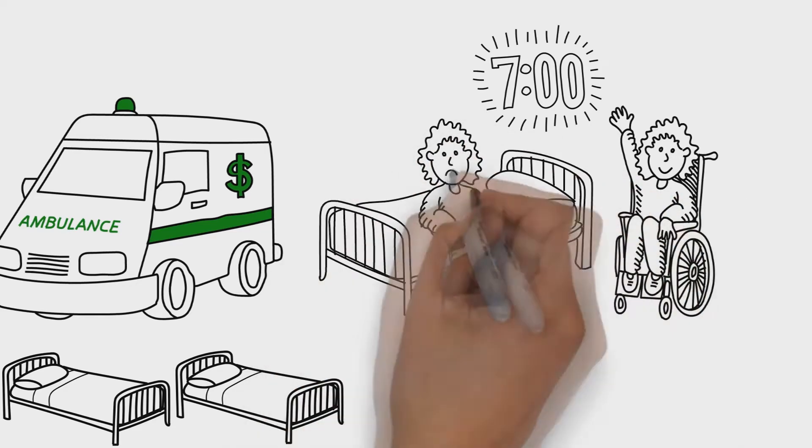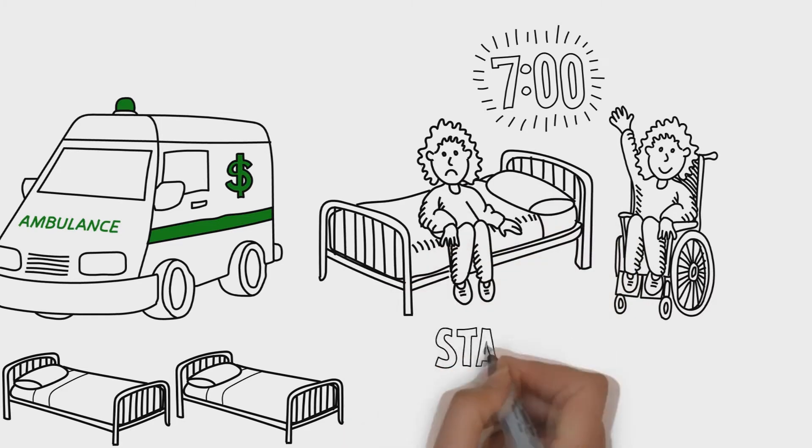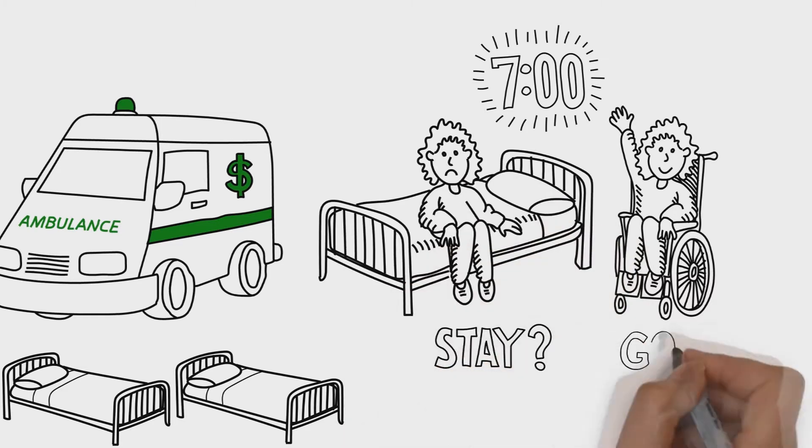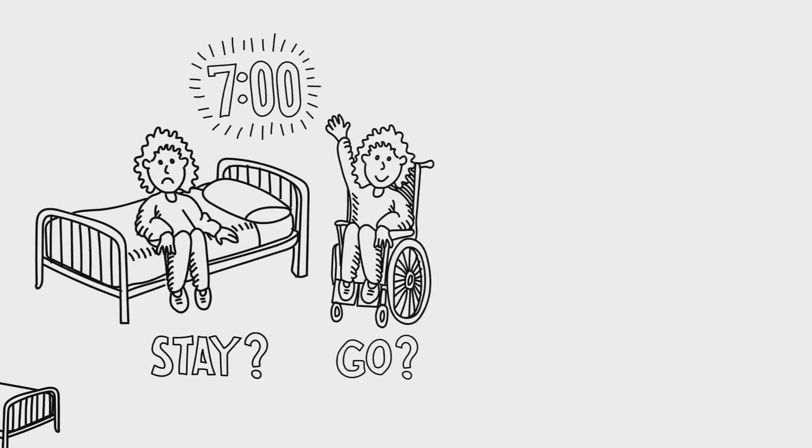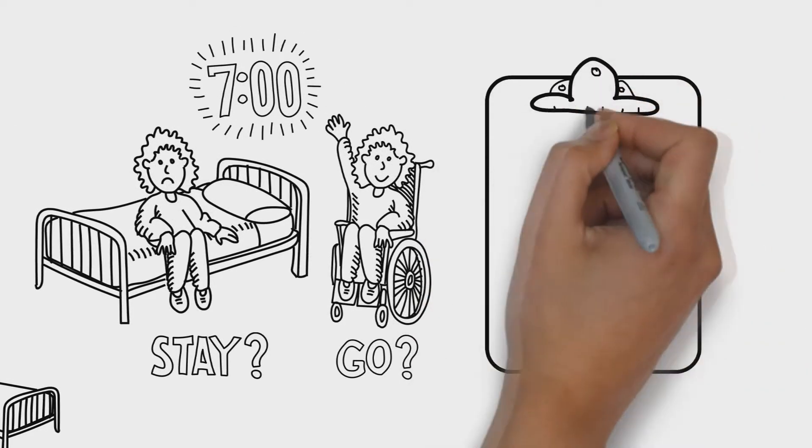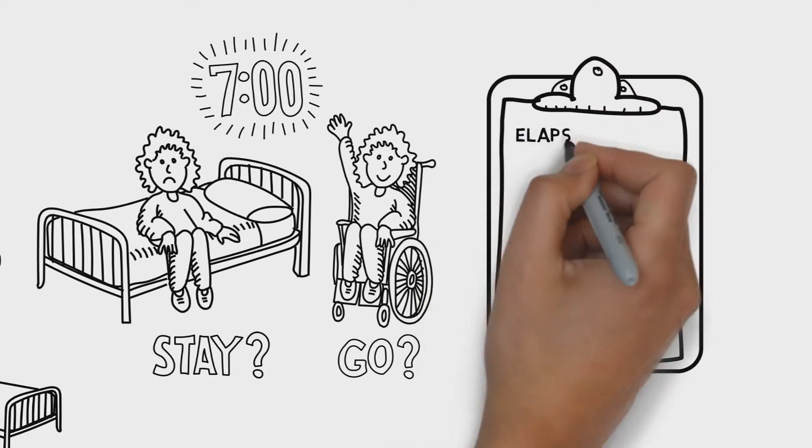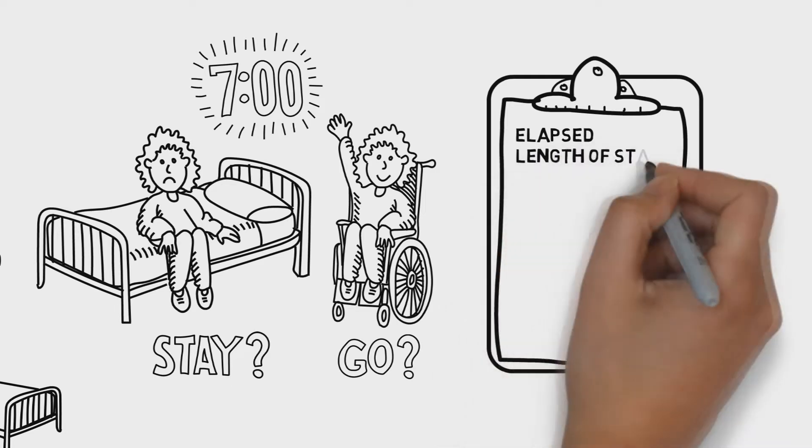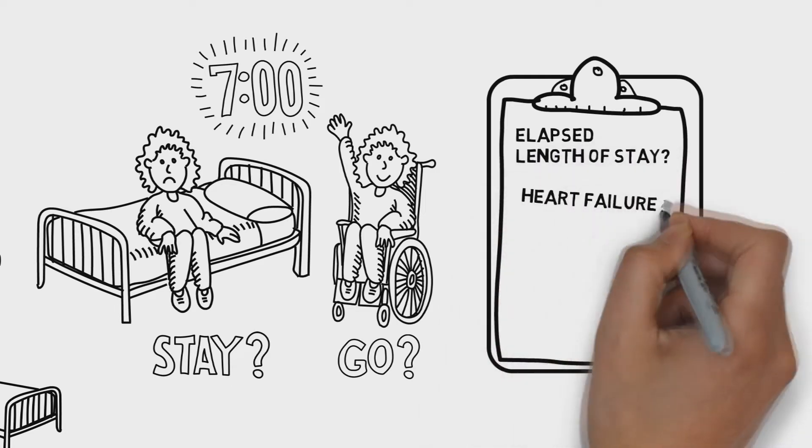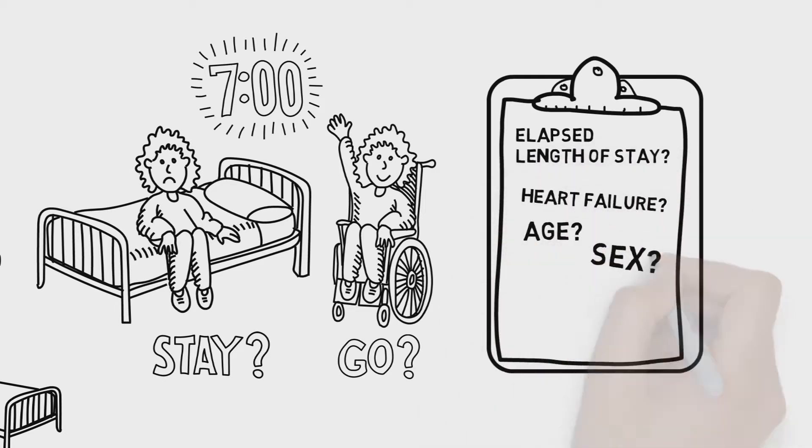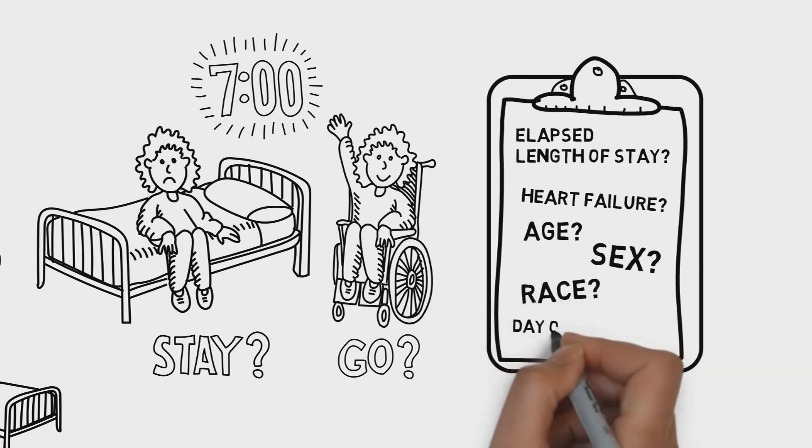Was the patient in observation status or formally admitted? How long had the patient been in the hospital? The longer the stay, all things being equal, the shorter the path to discharge. Did the patient suffer from chronic obstructive pulmonary disease or heart failure? We also plugged in patients' ages, sex, race, and the day of the week.